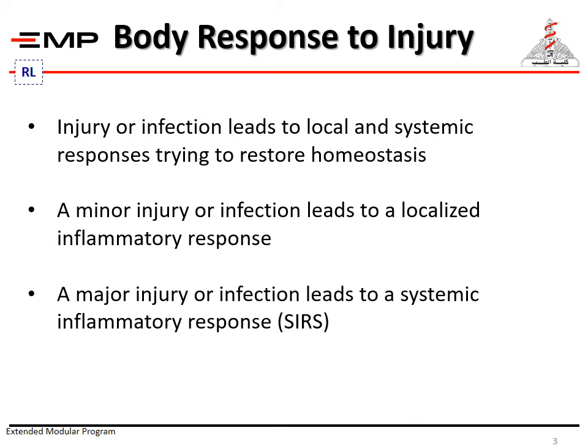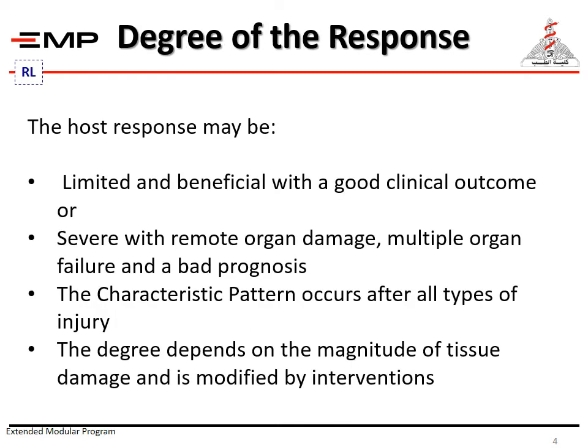Injury or infection leads to local and systemic responses trying to restore homeostasis. A minor injury or infection leads to a localized inflammatory response, while a major injury or infection leads to a systemic inflammatory response — what we call SIRS. The host response may be limited and beneficial with a good clinical outcome, or severe with remote organ damage, multiple organ failure, and a bad prognosis. The characteristic pattern occurs after all types of injury, and the degree depends on the magnitude of tissue damage and is modified by medical intervention.